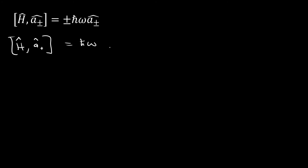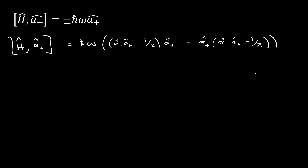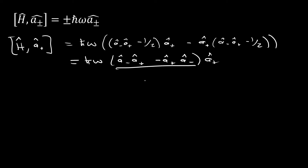Expanding [H-hat, a-hat+], we get h-bar·omega times (a-hat minus·a-hat plus minus one-half) times a-hat plus, minus a-hat plus times (a-hat minus·a-hat plus minus one-half). We can simplify this down to h-bar·omega times (a-hat minus·a-hat plus minus a-hat plus·a-hat minus), all multiplied by a-hat plus. You can clearly see this inner expression is a commutator, so we can write it as such.